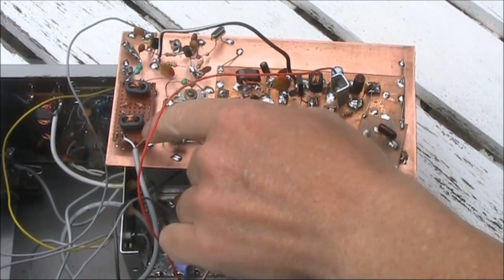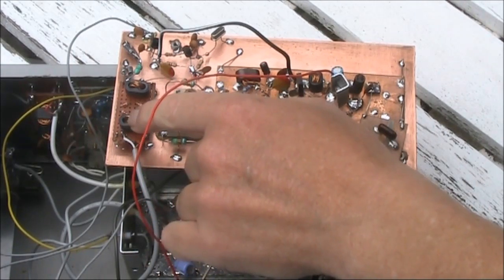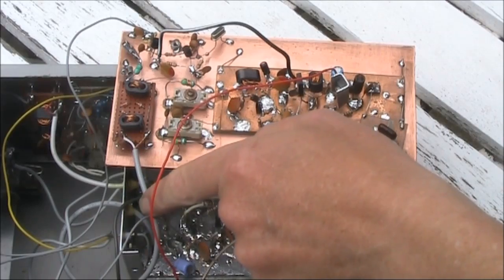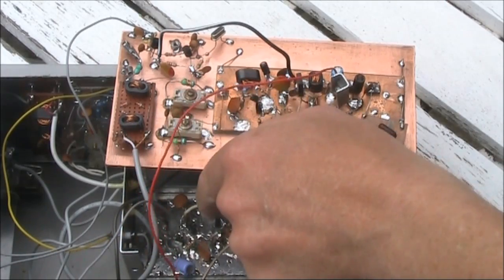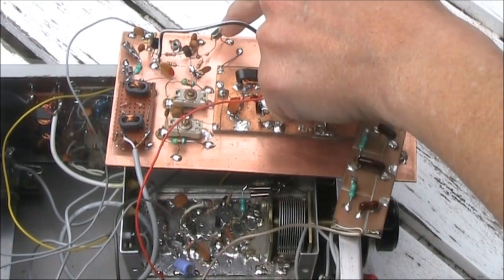This diode-balanced mixer here, which is the third used in this transceiver, is the transmit mixer. It mixes the 11MHz coming from the VFO with a locally generated signal on 4.032MHz.